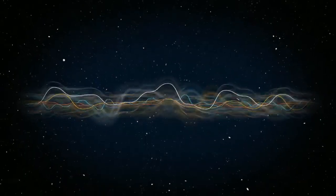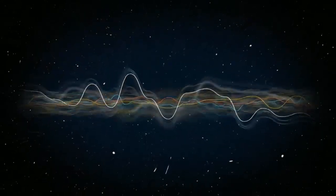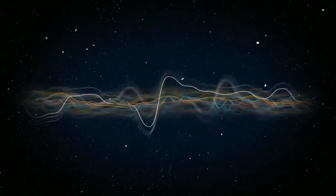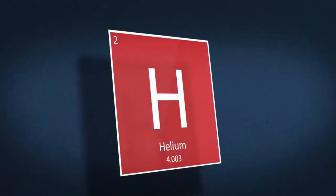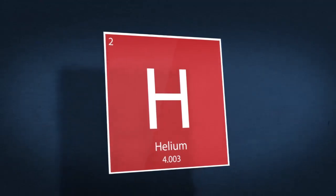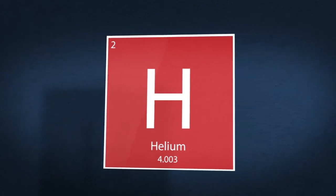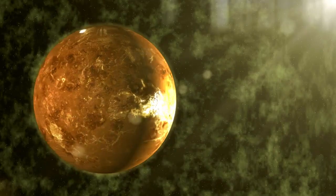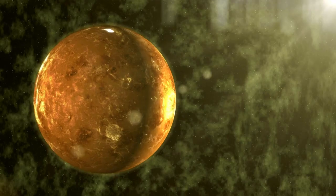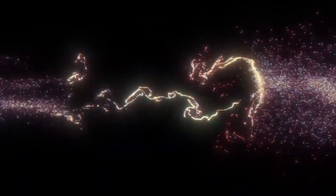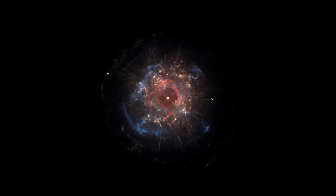Although Betelgeuse did experience a significant dimming, it has since regained some of its former brightness, which has somewhat alleviated immediate concerns. While the star is certainly not as bright as it once was, this partial recovery led some astronomers to speculate that Betelgeuse may simply be in a less active phase of its life. This idea suggests that the star might not be on the verge of a catastrophic explosion after all. However, despite this temporary recovery, Betelgeuse remains far from its previous levels of brightness, and the star's overall activity has decreased.